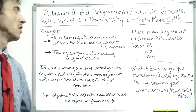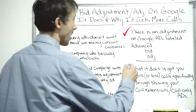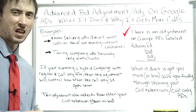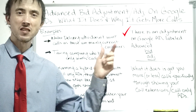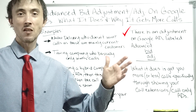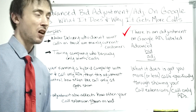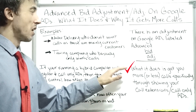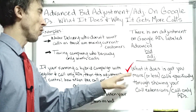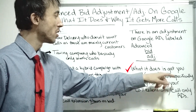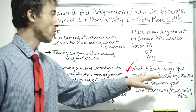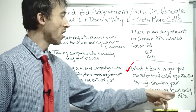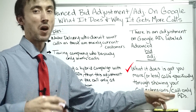There is an adjustment in Google Ads labeled 'Advanced Bid Adj,' short for Advanced Bid Adjustments. This was confusing when I first saw it — when you click on it, all it says is 'calls.' There's basically no content on the web that lays this out, including Google's own documentation. After testing, what it does is get you more or less calls on mobile devices by controlling how often your call extension shows on your ad.